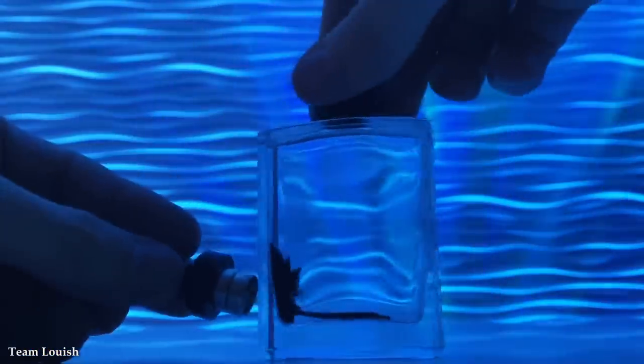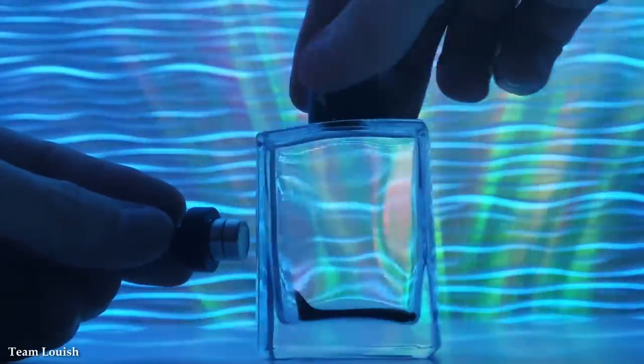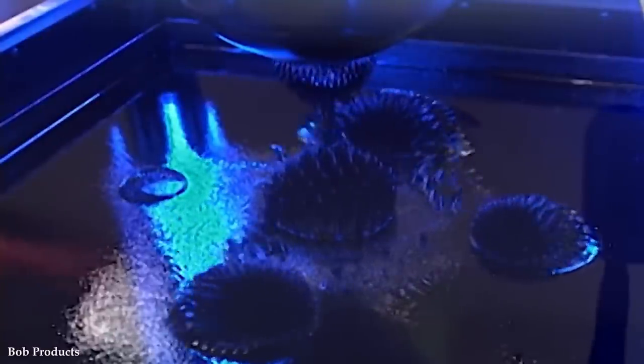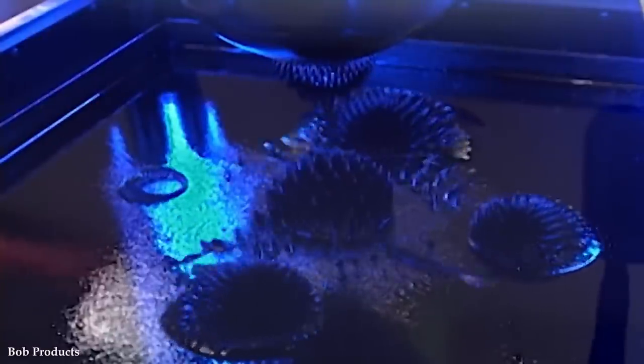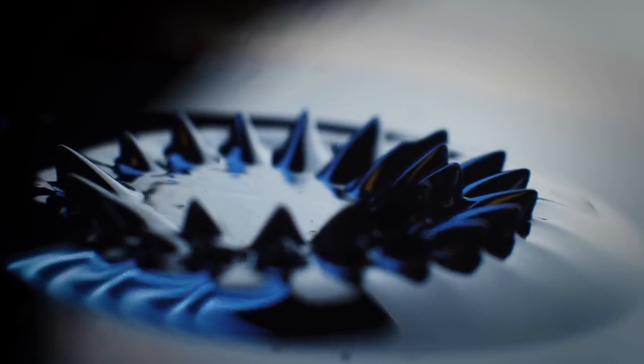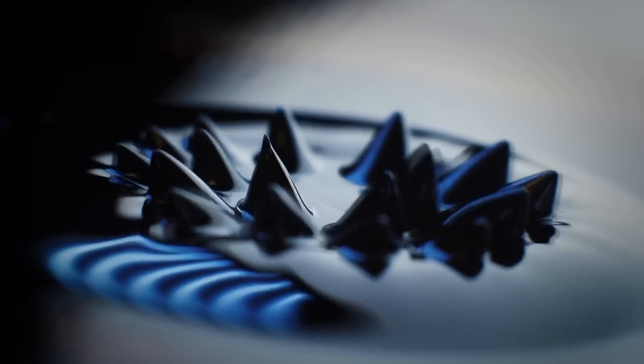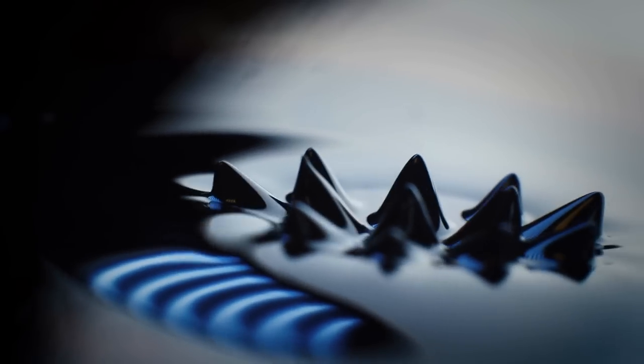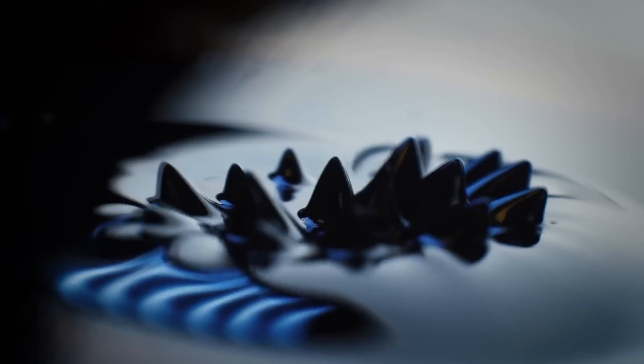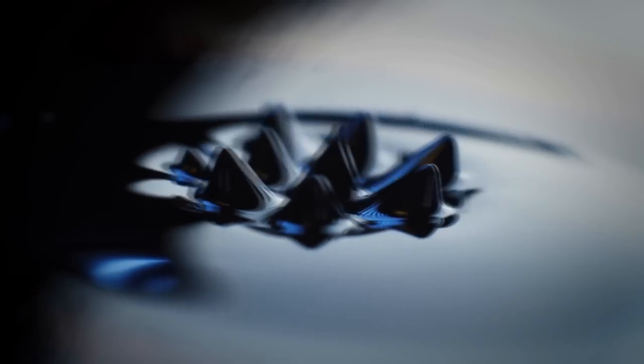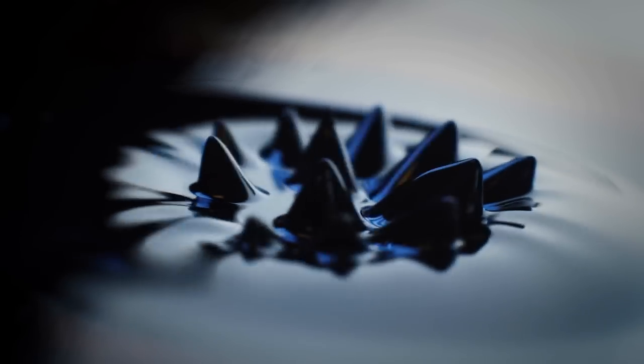The visual allure of this fluid display is further enhanced by the use of lighting. Illumination techniques such as backlighting or colored lights can be employed to accentuate the shapes and movements of this fluid, creating a visually striking and vibrant display. The interplay of light and shadow add depth and dimension to the fluidic patterns, captivating the viewer's attention and evoking a sense of wonder. Beyond its aesthetic appeal, the magnetic fluid display also serves as an educational tool. It offers a tangible and visual representation of the behavior of magnetic fields and fluid dynamics. Students and enthusiasts can observe firsthand the effects of magnetic forces on a liquid medium, exploring concepts such as surface tension, viscosity, and magnetism in a captivating and interactive manner.